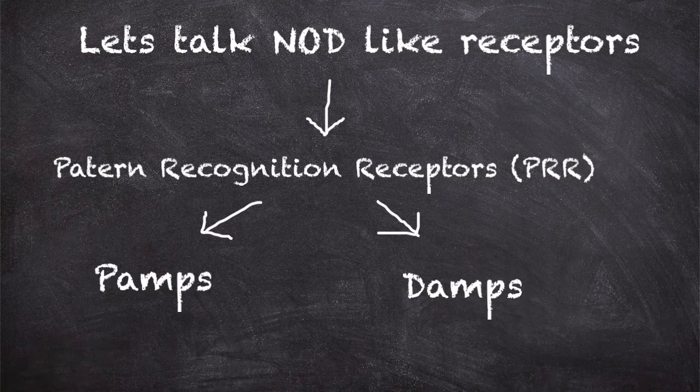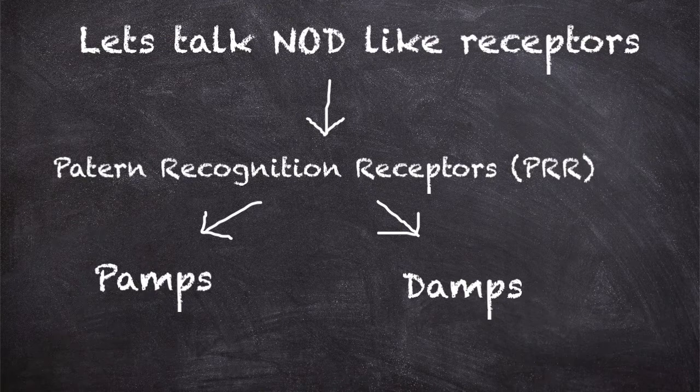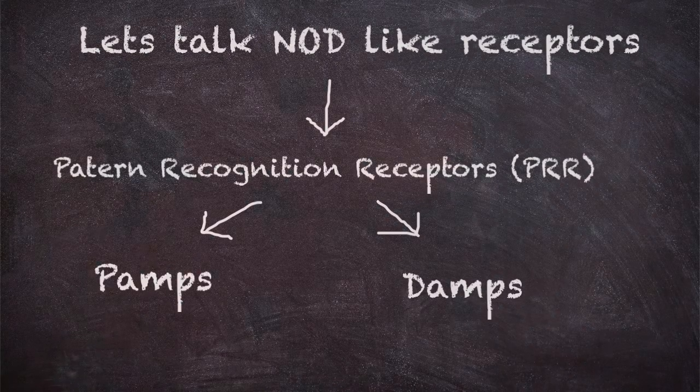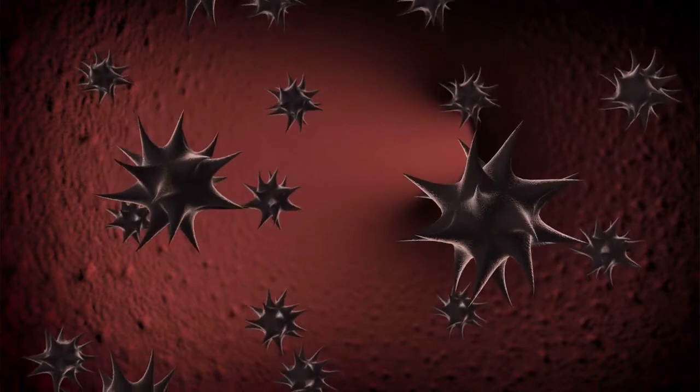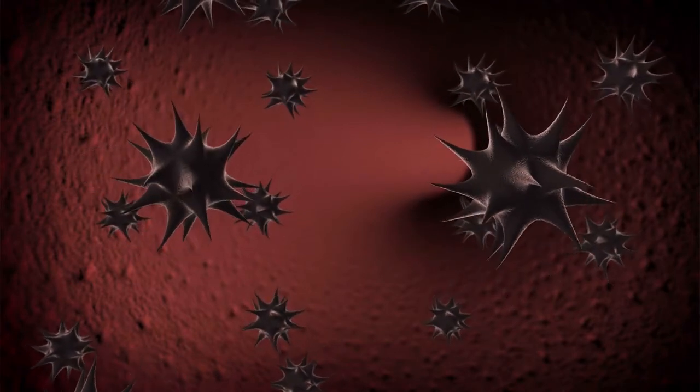Remember, receptors are detecting something. They're detecting patterns that are not our patterns, and also things like endotoxins released from these pathogens.